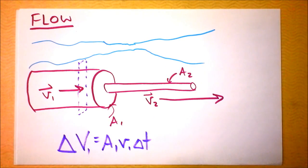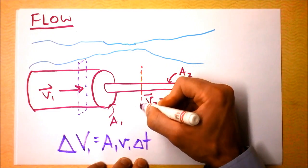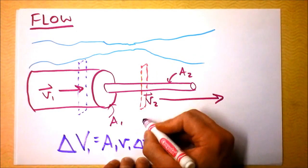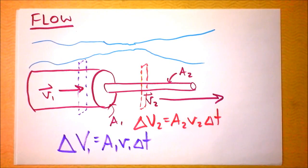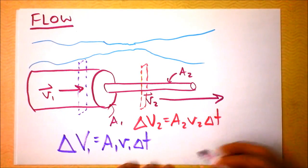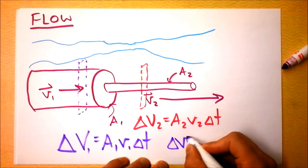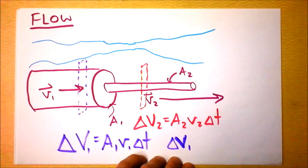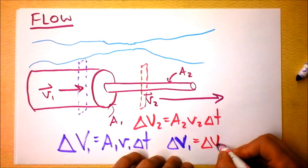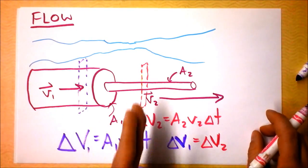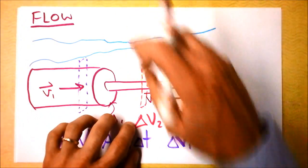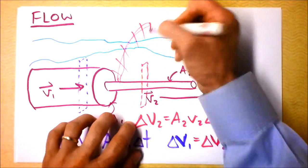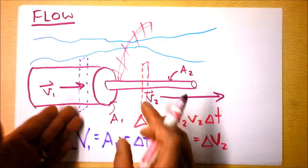If I take another slice over here, delta V2 equals area 2 times V2 times delta T. If we look at the same amount of time, the beautiful statement we can make is delta V1 equals delta V2. The volume of fluid that flows through one section of the tube equals the volume that flows through the next section. That just means nothing is backing up, nothing is storing fluid, and there are no leaks. All of the fluid that goes through here has to eventually go through here.